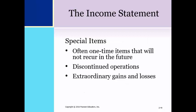Special or one-time items are reported that will not recur in the future, such as discontinued operations and extraordinary gains and losses. Discontinued operations occur when a firm sells or discontinues a clearly distinguishable portion of its business. The results of continuing operations are shown separately from the operating results of the discontinued portion of the business, and any gain or loss on disposal is also disclosed separately.